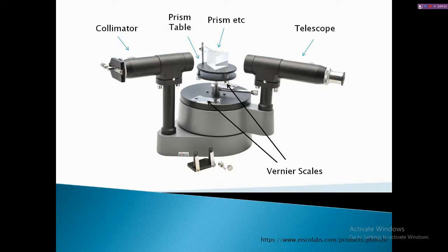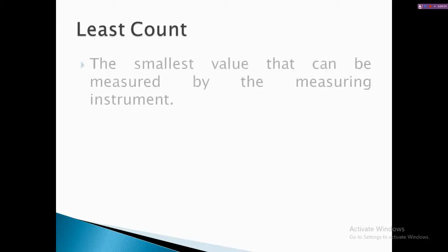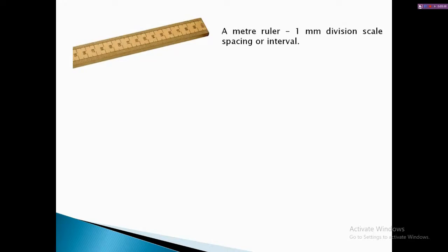Before we start any experiment with a spectrometer, we need to look into a term called the least count. Least count is basically the minimum measurement an instrument can give. For example, your watch — the minimum it can measure is one second, and beyond that it gives an error. The least count is the smallest value that can be measured by a measuring instrument. For example, a meter scale has a minimum division of one millimeter, so its least count is one millimeter.